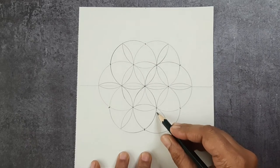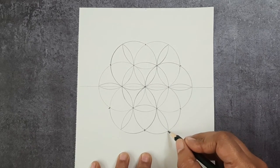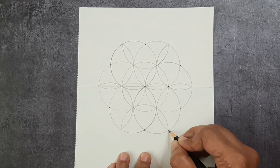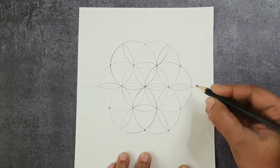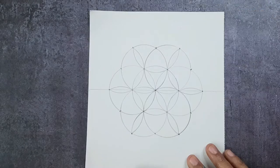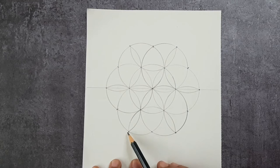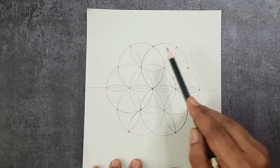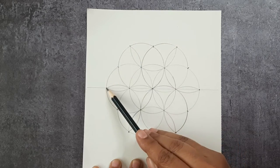Now if you see there is a petal kind of structure formed here that is touching the outermost circle line. Now keeping these points as center I'm going to draw six more half circles. So there are six points now: one, two, three, four, five, and six.